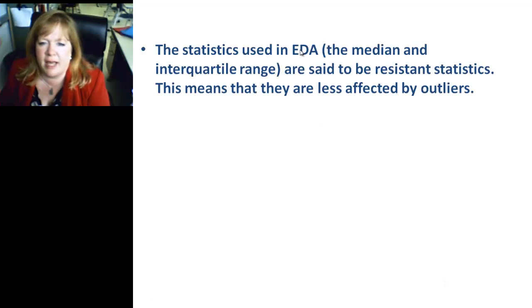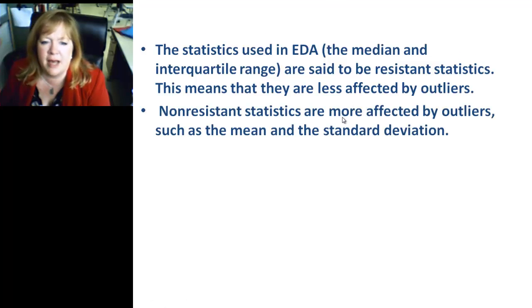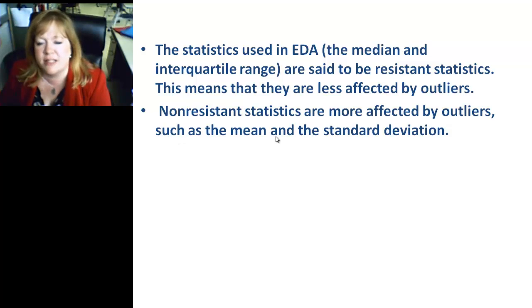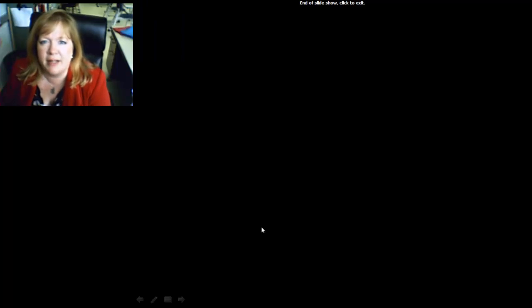Statistics used in EDA — exploratory data analysis — are the median and the interquartile range. They're said to be resistant statistics because they're not affected as much by outliers. The non-resistant statistics are more affected by outliers, such as the mean and the standard deviation. Median and interquartile range more accurately summarize the data when the distribution is skewed or contains outliers. That's something to think about.